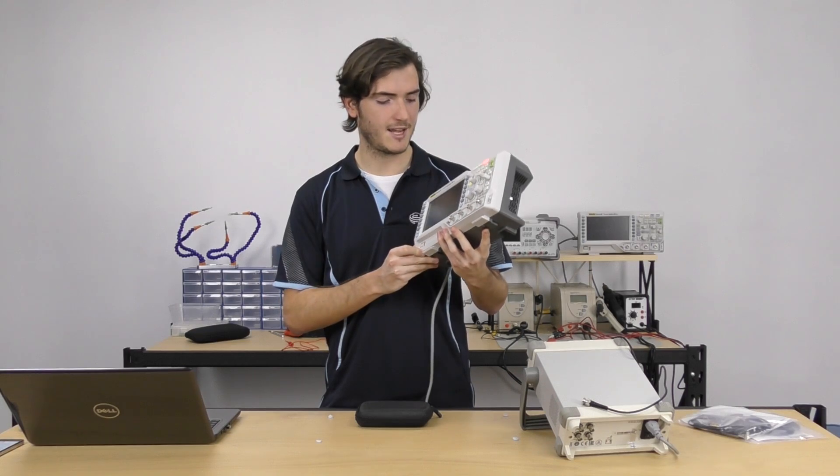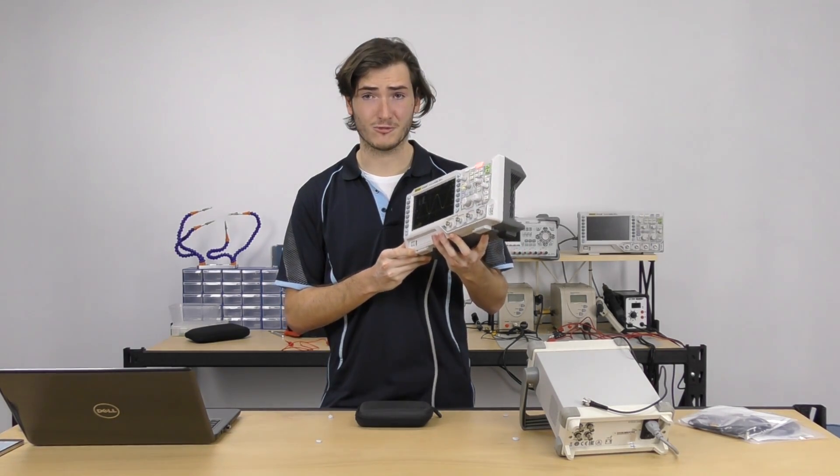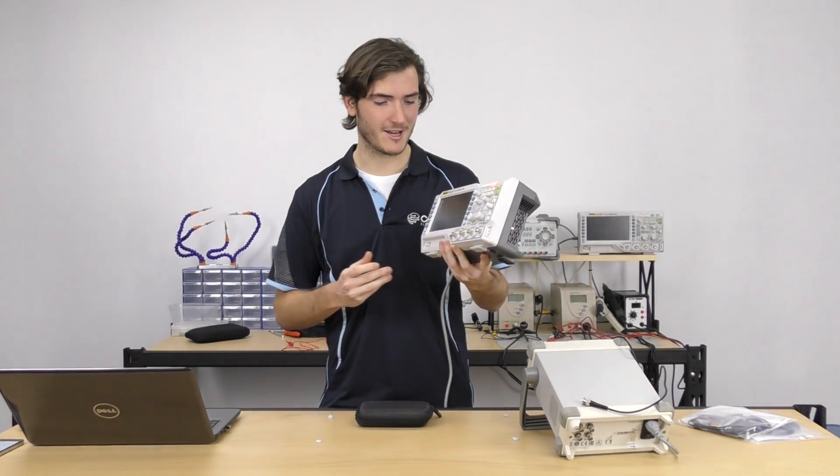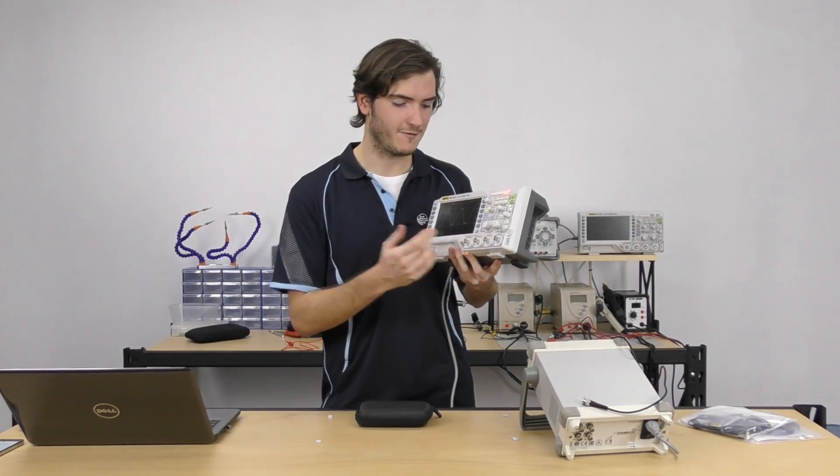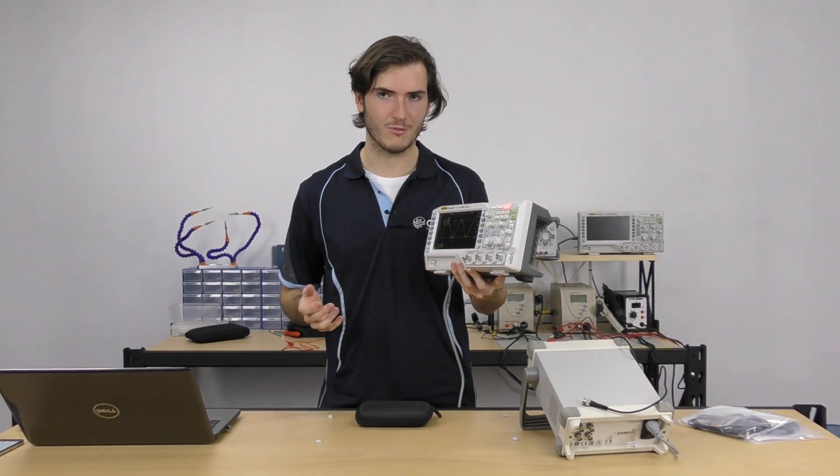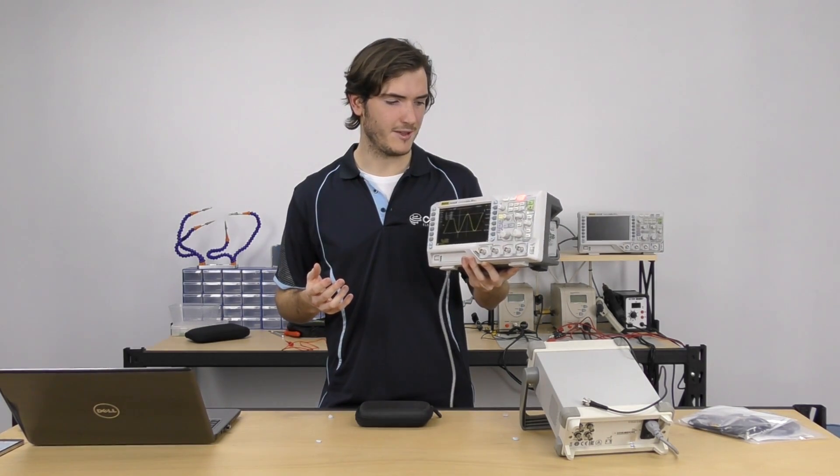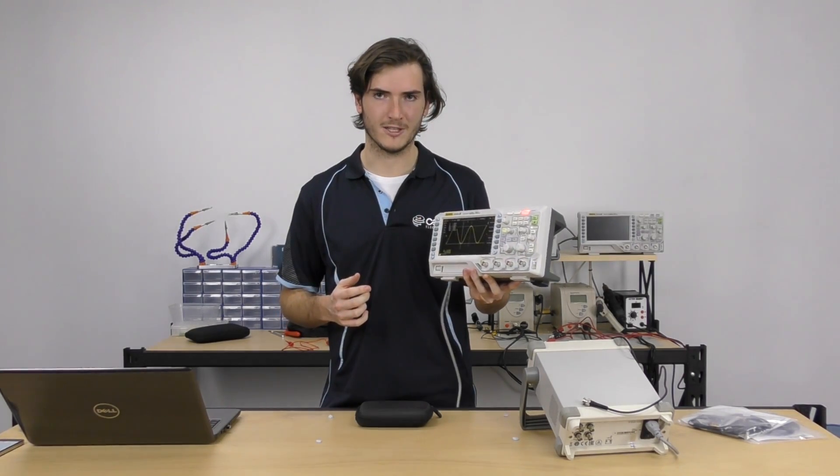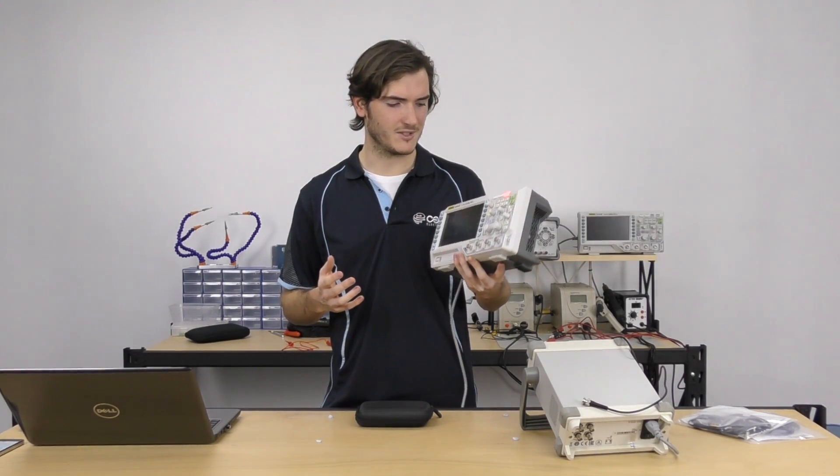There you have it, the Rigol DS1054Z. This is a great first scope. I can't believe that I'm saying that a four-channel deep memory scope is entry-level, but the 1000Z series that Rigol released really was a game-changer for entry-level scopes.